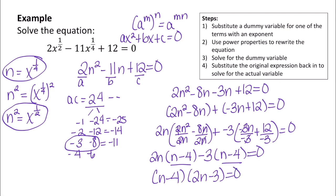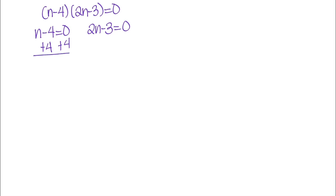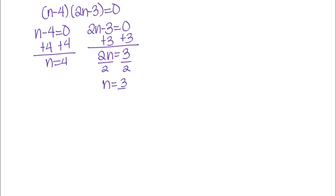Setting each factor equal to 0: n minus 4 equals 0 gives n equals 4, and 2n minus 3 equals 0 gives 2n equals 3, so n equals 3 over 2.